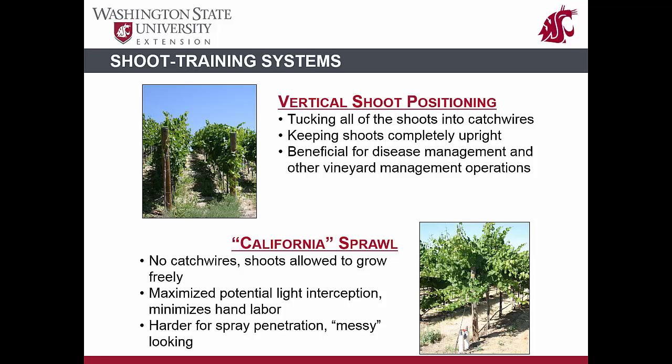The other major form of canopy training is sprawl. Here, shoots are allowed to grow freely, creating a very disorganized looking canopy. However, this system maximizes sunlight capture while minimizing sunburn on the fruit. It is a particularly good system in areas where sunlight and heat are ample and in areas with low disease pressure, as pesticide penetration into the fruit zone can be challenging. There are some systems that are hybrids of these two, often consisting of vertically training one side of the canopy while letting the other side sprawl, or training up the middle one-third of the shoots allowing both sides to sprawl. These systems are typically referred to as modified VSP systems.